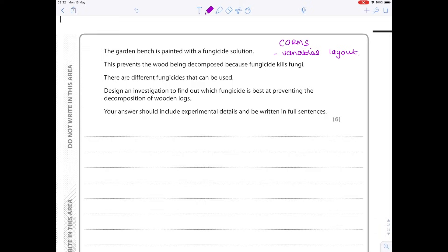The garden bench is painted with a fungicide solution. This prevents the wood being decomposed because fungicide kills fungi. There are different fungicides that can be used. Design an investigation to find out which fungicide is best at preventing the decomposition of wooden logs. Your answer should include experimental details and be written in four sentences. So we are interested in looking at different types of fungicide and which one is best at preventing decomposition of wooden logs.